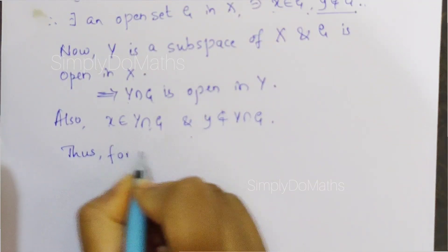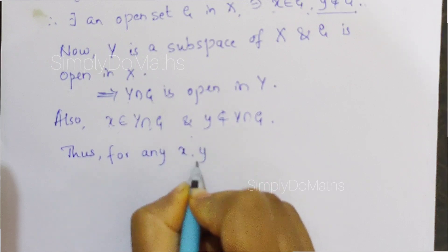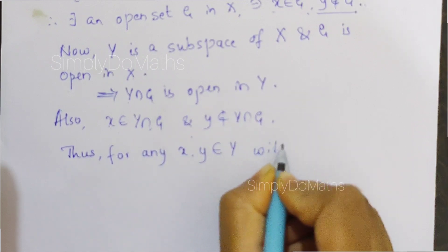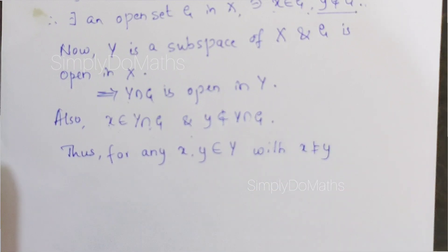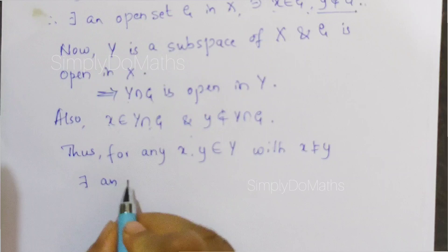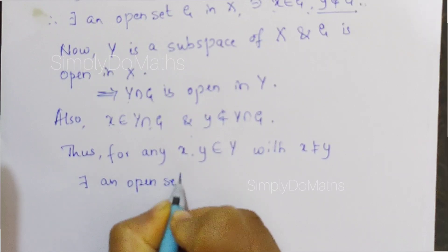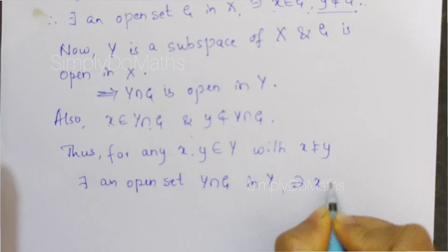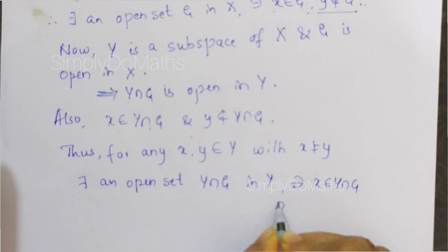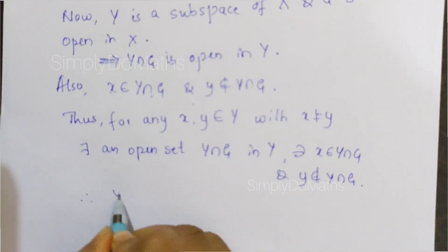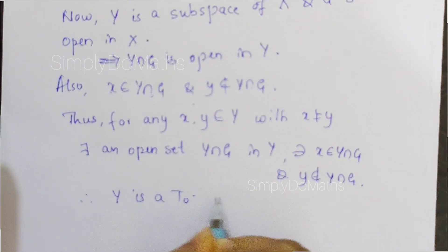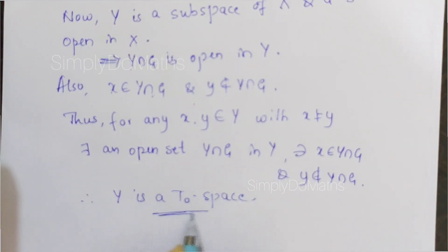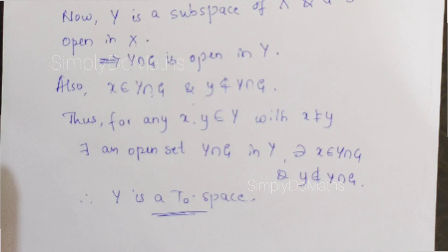Thus, for any x and y belonging to Y with x not equal to y — that is, x and y are distinct elements — there exists an open set Y intersection G in Y such that x belongs to Y intersection G and y does not belong to Y intersection G. Therefore, by definition, Y is a T0 space. Hence, every subspace of a T0 space is a T0 space. This proves the theorem.